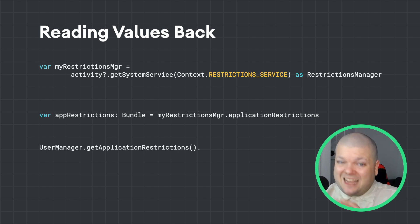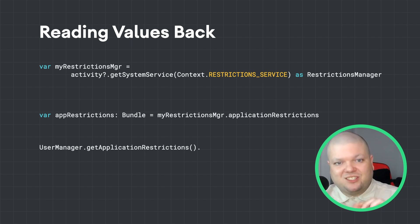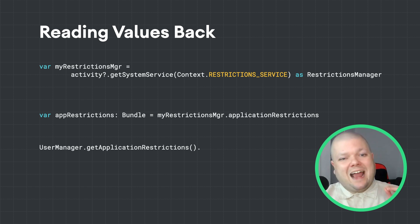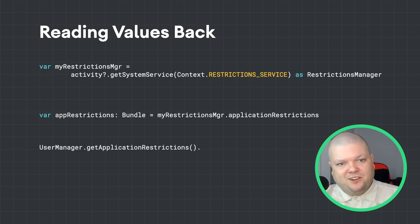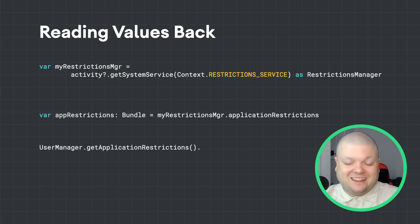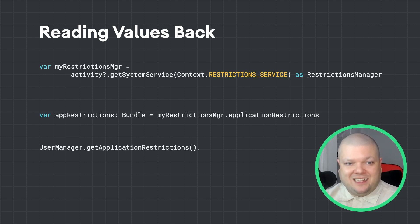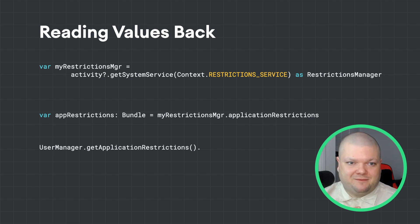You can also get the same restrictions by calling get application restrictions on a user manager. In both cases, get application restrictions returns a bundle containing a key-value pair for each configuration that's been set. The key is what you specified when declaring the configuration in the restrictions XML file, and the value is what's been set by the IT admin.